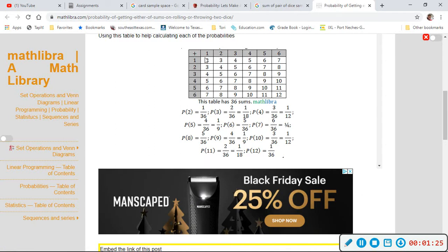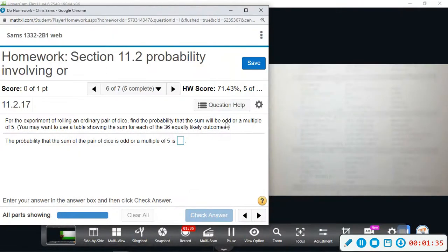So this shows the sum. If you roll a one and a one you get a two, so it's one plus one is two. If you roll a one and a two you get three. So these are the sums. Alright, we want to find the probability that the sum will be odd or a multiple of five.